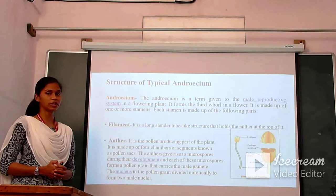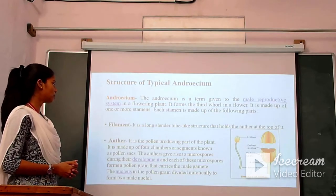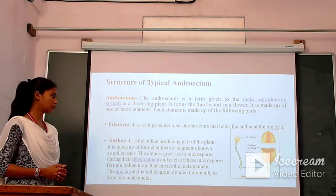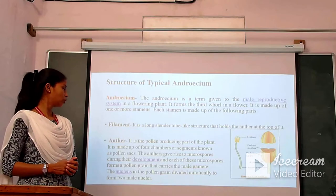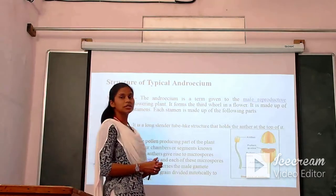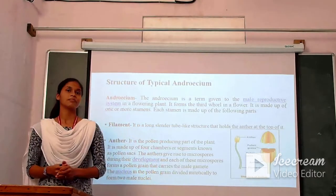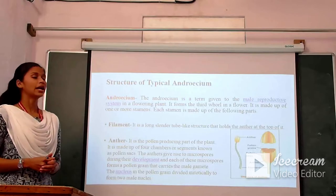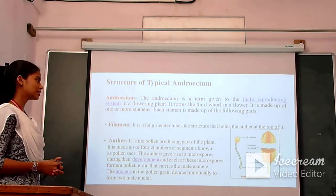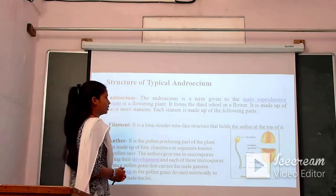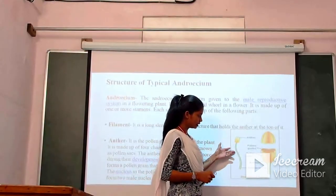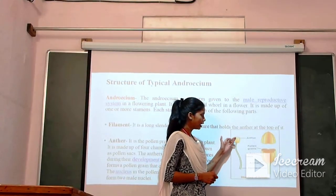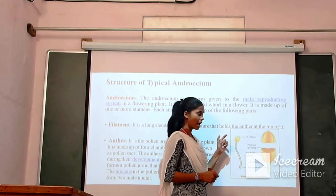The anther gives rise to microspores during their development, and each of these microspores forms a pollen grain that carries the male gamete. The nucleus in the pollen grain divides by mitosis to form two male nuclei. Androecium is the main reproductive organ in a flowering plant; the individual part of that androecium is known as stamen, and that stamen consists of two parts: anther and filament. This thread-like structure is the filament and the head-like structure is the anther.